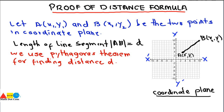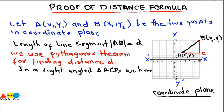We construct a right-angle triangle by joining these points, introducing another point C. So we have triangle ACB. In right-angle triangle ACB, we have the hypotenuse, base, and perpendicular side. The hypotenuse is AB, which equals d — the distance we have to find. AC and BC are the remaining two sides.